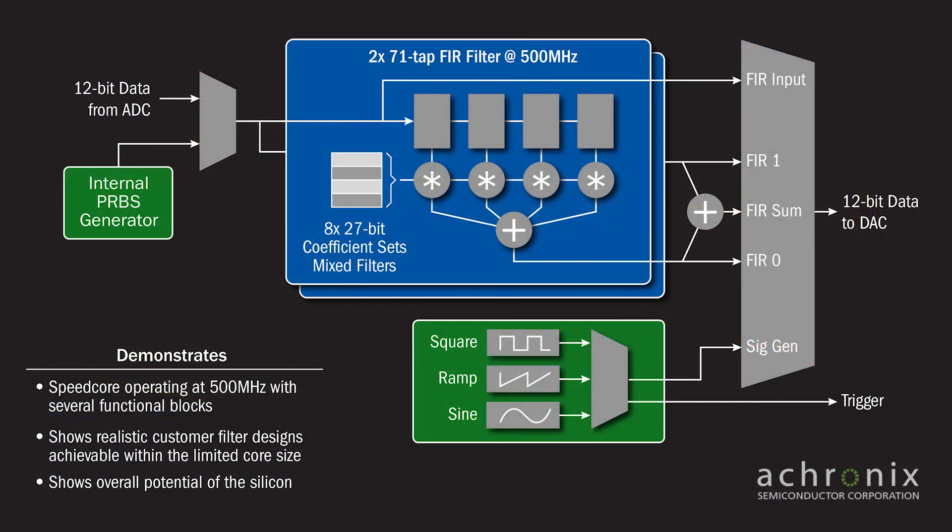In this demo design, we have implemented several built-in signal generators and two blocks of finite impulse response filters which have selectable coefficients. We can forward the filter outputs to the D-to-A converter either individually or as a sum of the two filter outputs.